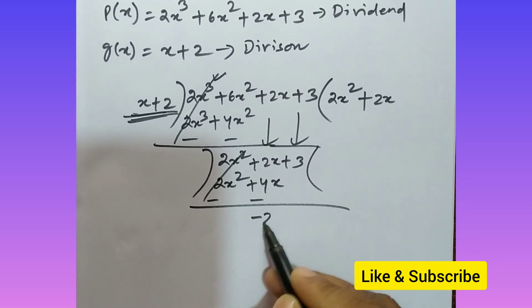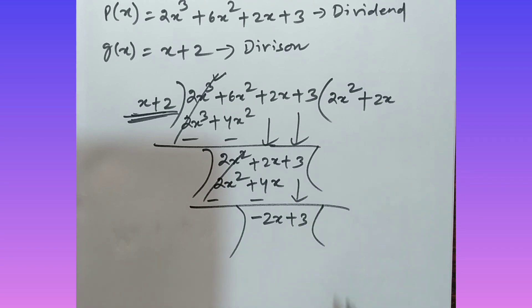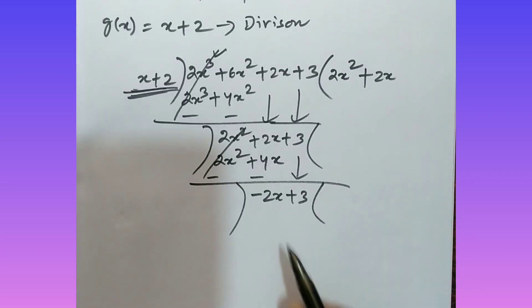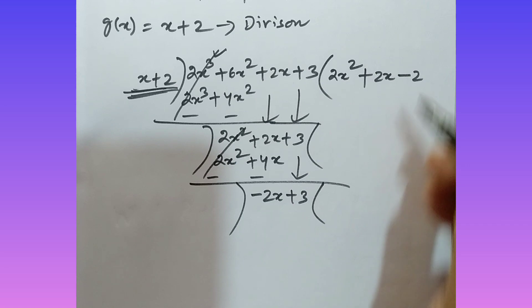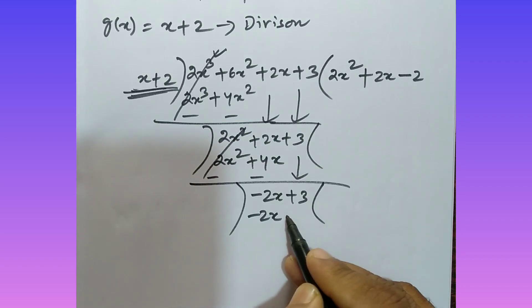Now look at here, this minus 2x divided by x, what do you get? Minus 2. So you put here minus 2 in the quotient. Multiply this minus 2 with the whole divisor. What are you getting? Minus 2x and minus 4. Then add: 3 plus 4 is 7. So this is your remainder.